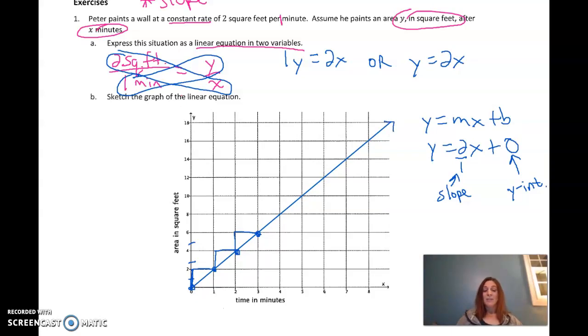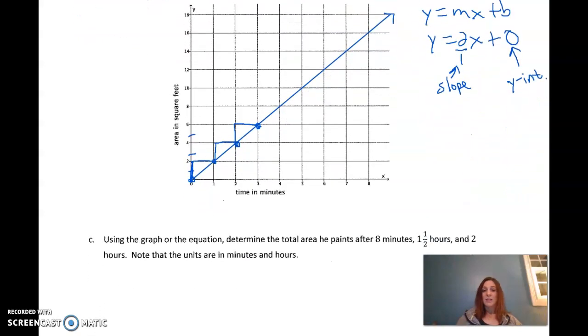So now we have this line that represents all the, or shows all the solutions to how much Peter can paint. At 4 minutes, he's painting 8 square feet. At 5 minutes, he's painting 10 square feet. So our equation here represents that, and so does our graph. Now it says we can use either to determine the total area paints after 8 minutes, 1 and a half hours, 2 hours. And it says note that the units are in minutes and hours.